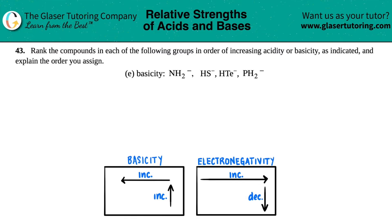Number 43. Rank the compounds in each of the following groups in order of increasing acidity or basicity as indicated and explain the order you assigned. In this case, we have to rank in terms of increased basicity: NH2⁻, HS⁻, HTe⁻, and PH2⁻.